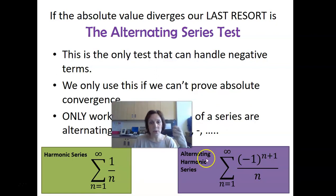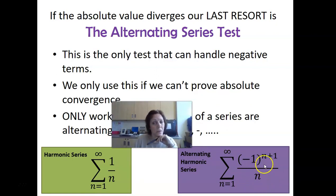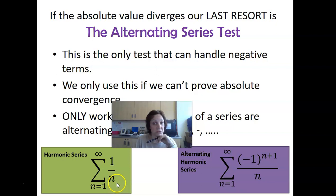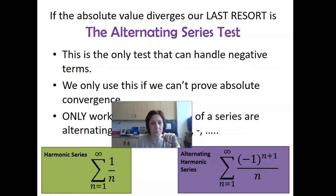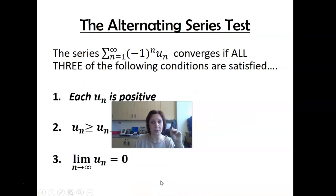So we have this question. Here's what I know. This series is plus, minus, plus, minus. I know for a fact that if I take its absolute value, it's going to diverge. But is there any chance it'll still converge if I let it alternate? And that's what we need to find out. Let's talk about the alternating series test.